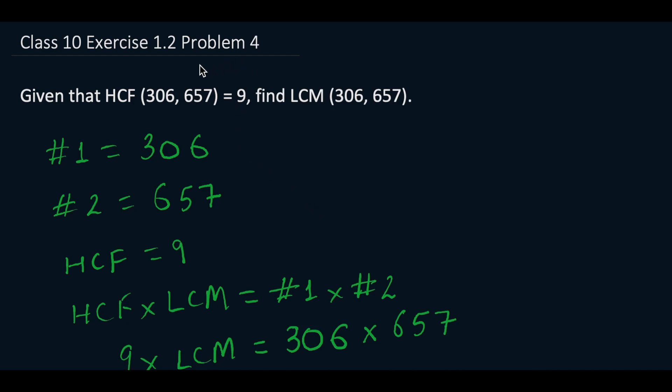Welcome to another problem of Exercise 1.2, Problem 4. We are given that HCF of 306 and 657 is 9. We need to find the LCM, so we will be using the property that HCF multiplied by LCM equals the product of two numbers.